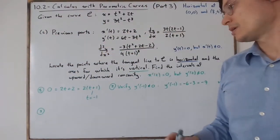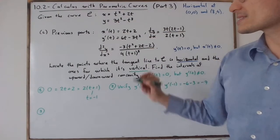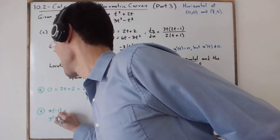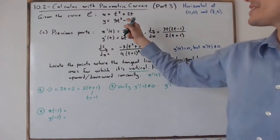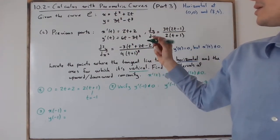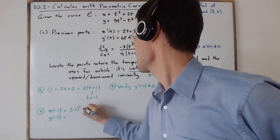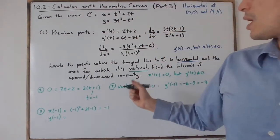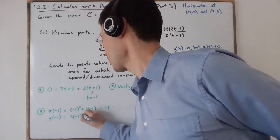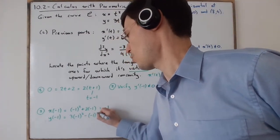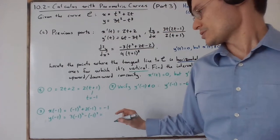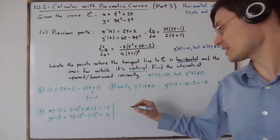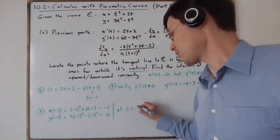Step 3: find x(−1) and y(−1). Plugging in: x(−1) equals 1 plus 2 times (−1), giving 1 minus 2 equals negative 1. And y(−1) equals 3 times (−1)² minus (−1)³, giving 3 plus 1 equals 4. So the tangent line is vertical at the point (−1, 4).